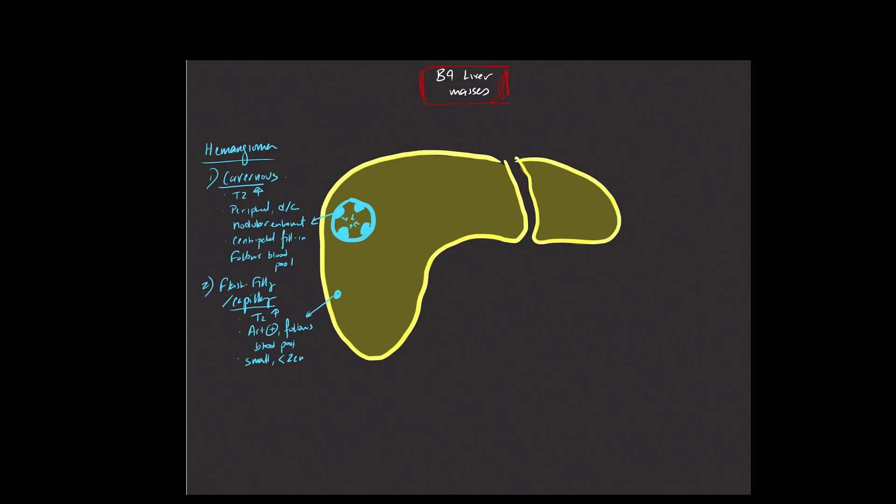On the other hand, we have this entity known as giant hemangiomas. We call them giant when they're typically more than five centimeters, though there are some variable definitions of that within the literature.